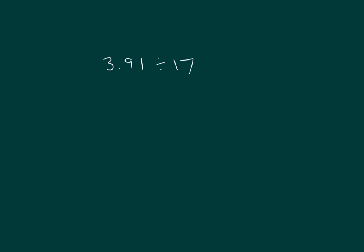This problem is very similar. We have 3.91 divided by 17. When we estimate it, think about 20 again. And we estimate 4 divided by 20. 4 divided by 20 is the same as 4 divided by 2 divided by 10. 4 divided by 2 is 2 divided by 10 is 2 tenths.